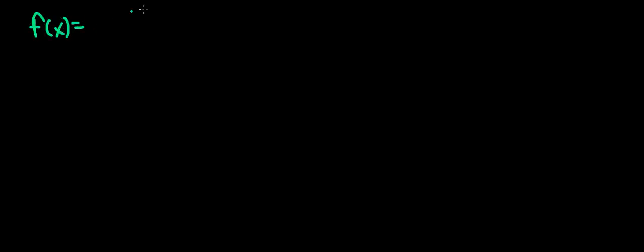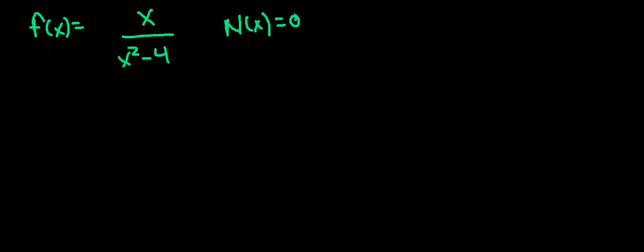So the rational function I have this time is f(x) = x / (x² - 4). The first thing I want to do is find the x-intercepts, and the x-intercepts are going to be when the numerator is equal to 0. That's pretty easy — the x-intercept is equal to 0.